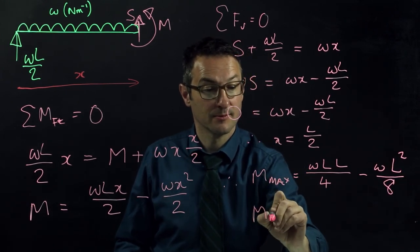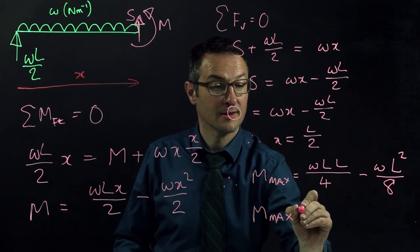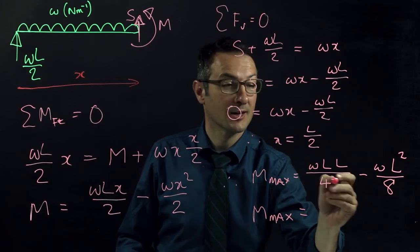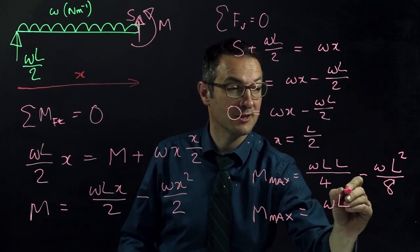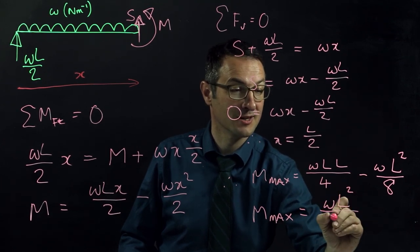So the maximum moment in a simply supported beam carrying a UDL, which is the equation that every structural engineer probably uses most, is equal to WL squared over 8.